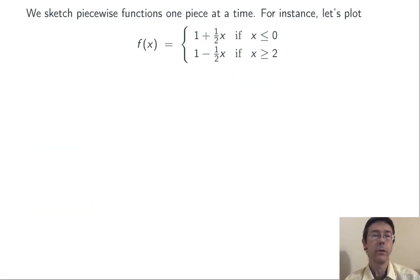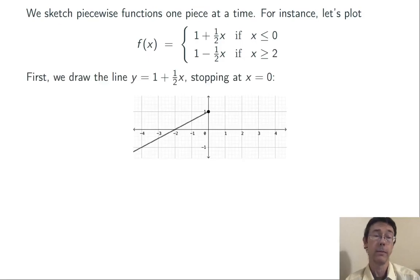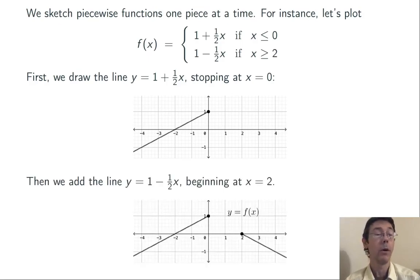We sketch piecewise functions one piece at a time. For instance, let's plot this same function that we've been working on. First, we draw the first branch, one plus one half x, stopping at x equals zero. In other words, we're just plotting that line to the left of x equals zero. Then let's graph one minus one half x, but just the part of it with x greater than or equal to two. So this plot at the bottom is the whole graph of y equals f of x.